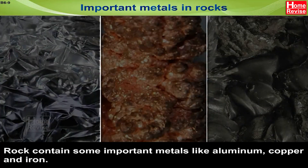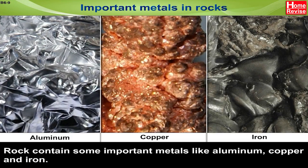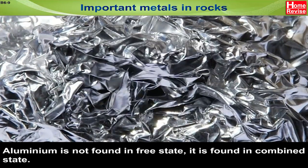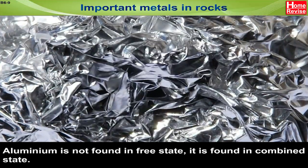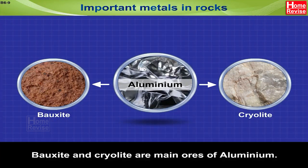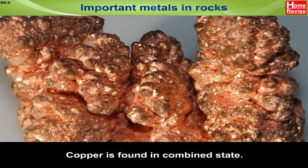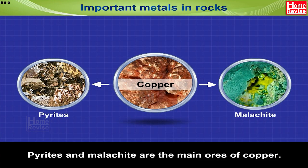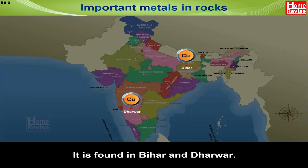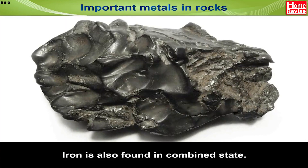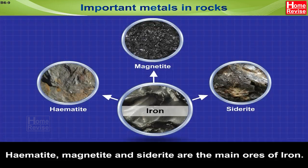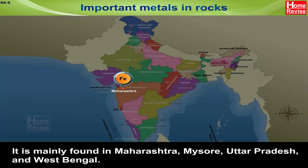Rocks contain some important metals like aluminium, copper, and iron. Aluminium is not found in free state; it is found in combined state. Bauxite and cryolite are the main ores of aluminium. Aluminium is found in Andhra Pradesh, Jamnagar and Surat. Copper is found in combined state; pyrites and malachite are the main ores of copper, found in Bihar and Dharvar. Iron is also found in combined state; hematite, magnetite and siderite are the main ores of iron, mainly found in Maharashtra, Mysore, Uttar Pradesh and West Bengal.